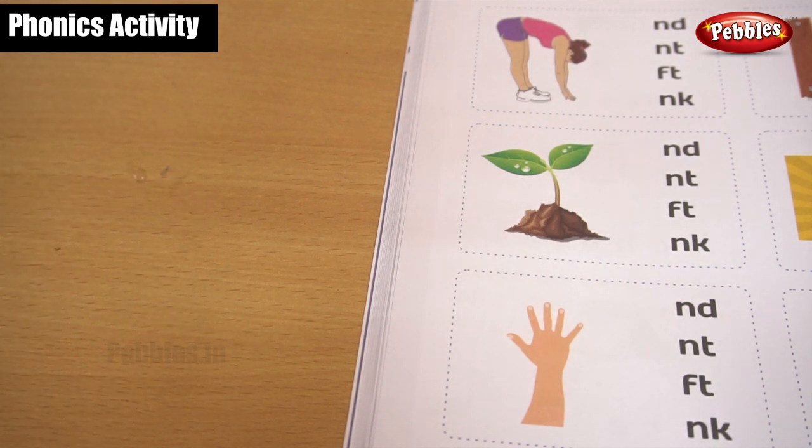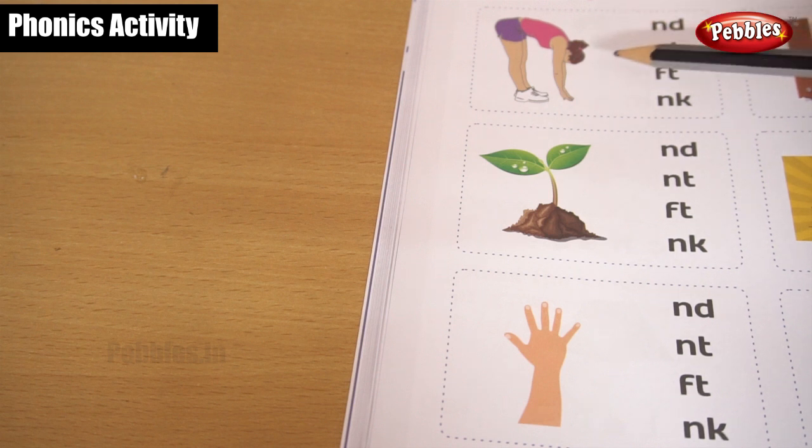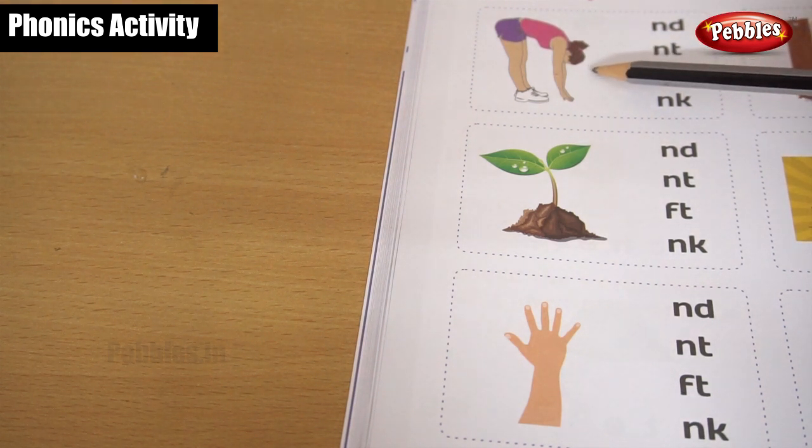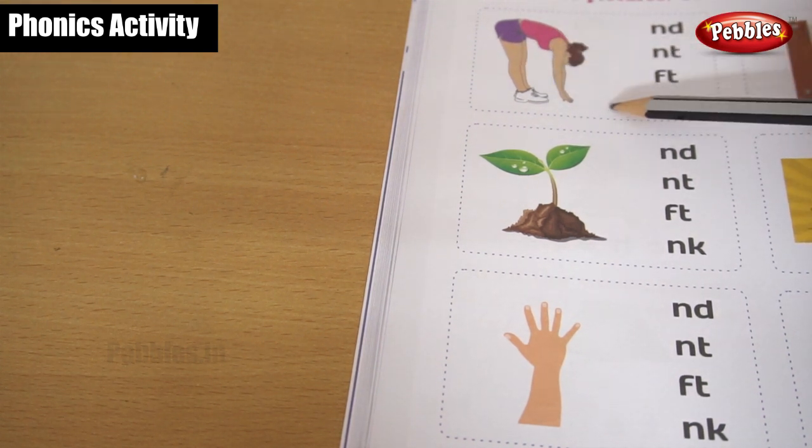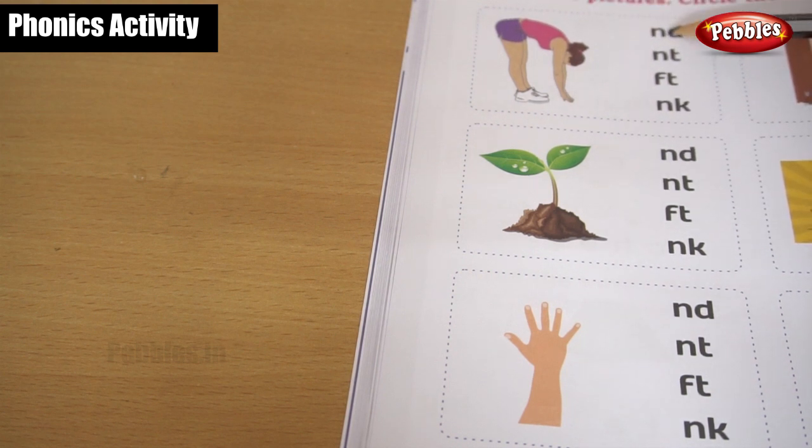Okay children, let's go to the next beautiful exercise. Look at the picture carefully children. She is bending, isn't it? She is bend. So the end word is N-D, bend.